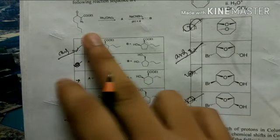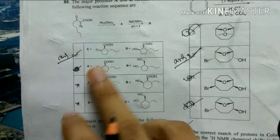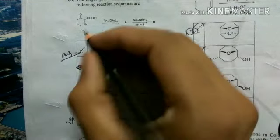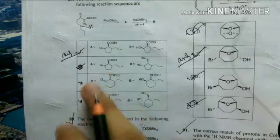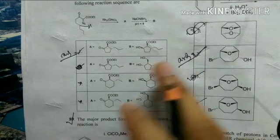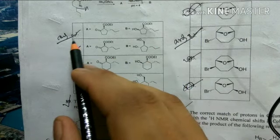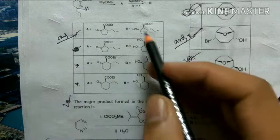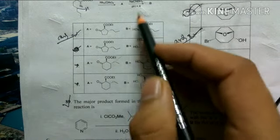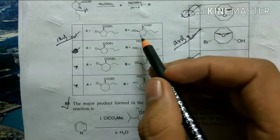The next question is a carbene reaction. A carbene forms and C-H insertion occurs, giving two possible ring sizes: a five-membered or a six-membered ring. According to Baldwin's rules, five-membered ring formation is faster than six-membered, so option A is the correct answer.